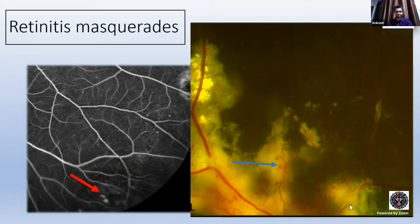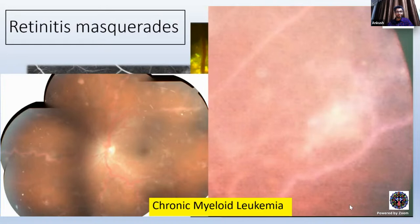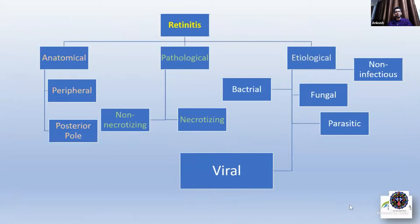Another case was referred as post-fever retinitis because the patient gave a history of fever and had retinitis-like patches. But when we did investigations, there was a myeloid shift and she was a case of chronic myeloid leukemia. So once you make a diagnosis of retinitis, it can be classified anatomically as peripheral retinitis or posterior pole retinitis, which is slightly less common.